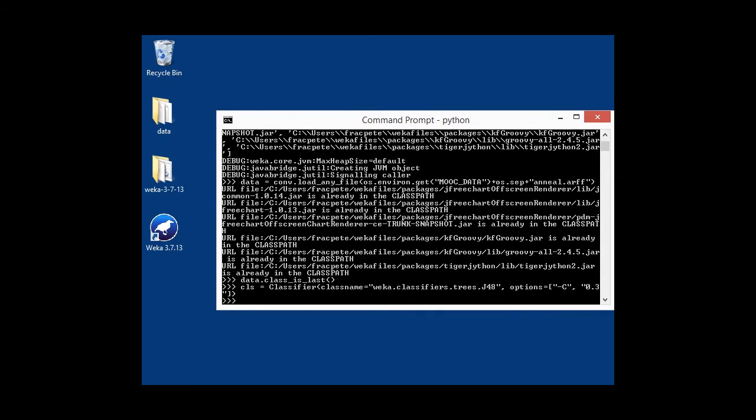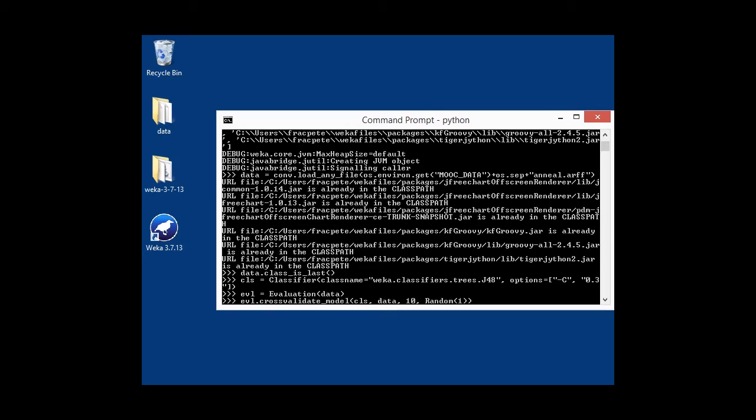So whereas in Jython we simply said, oh, I want to have the J48 class, here we're basically going to instantiate a classifier class and tell the Bicycle class what Java class to use, which is our J48 classifier, and with what options. So the same confidence factor of 0.3. And once again, same thing for the evaluation class. We instantiate an evaluation object with the training data to determine the priors, and then cross-validate the classifier on the data with 10-fold cross-validation. That is done.